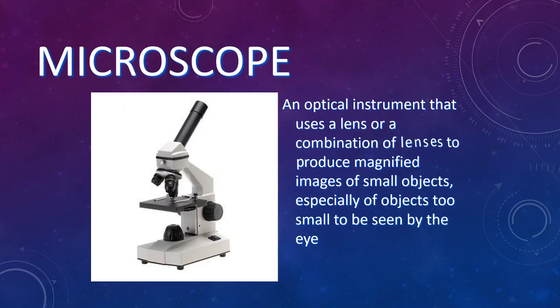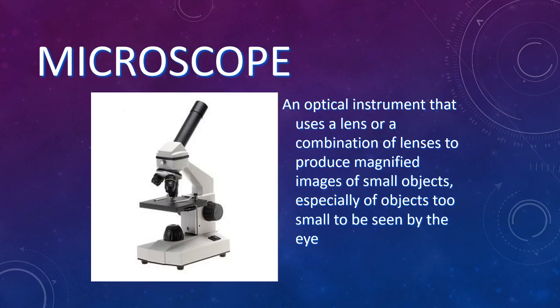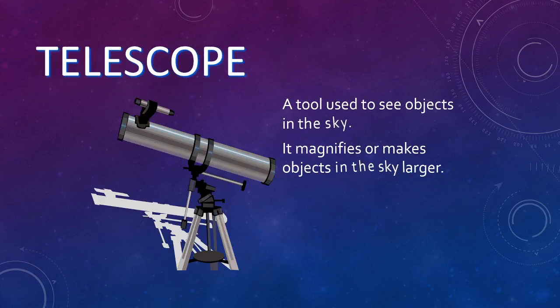A microscope — we'll use these a lot in life science and biology. This allows you to see very, very small objects that you couldn't see with just your eye, like cells. We'll use this a lot to see mitosis and meiosis. A telescope we probably won't be using too often, but it doesn't hurt to learn what it is. It allows you to see objects in the sky and makes them larger so that you can see them.